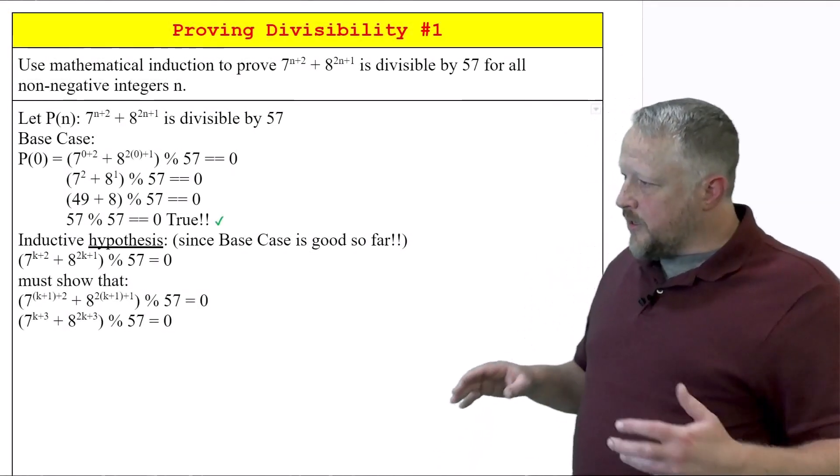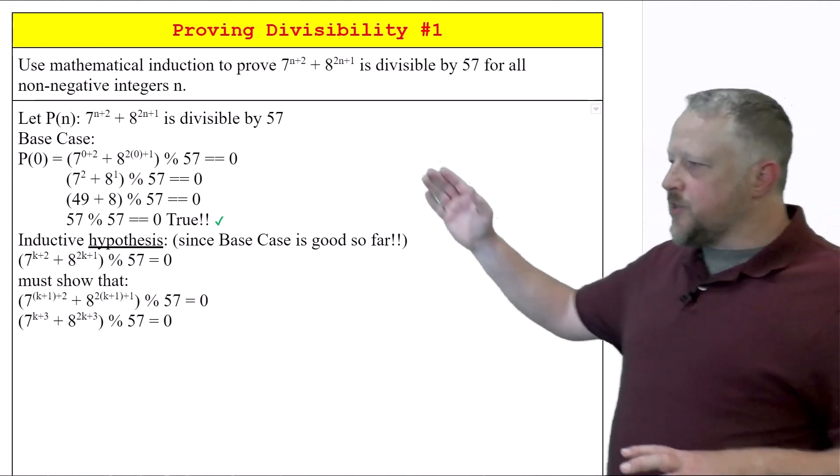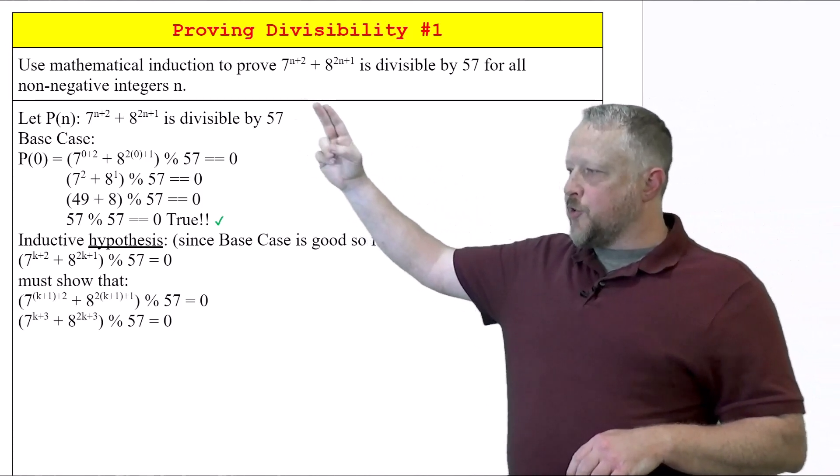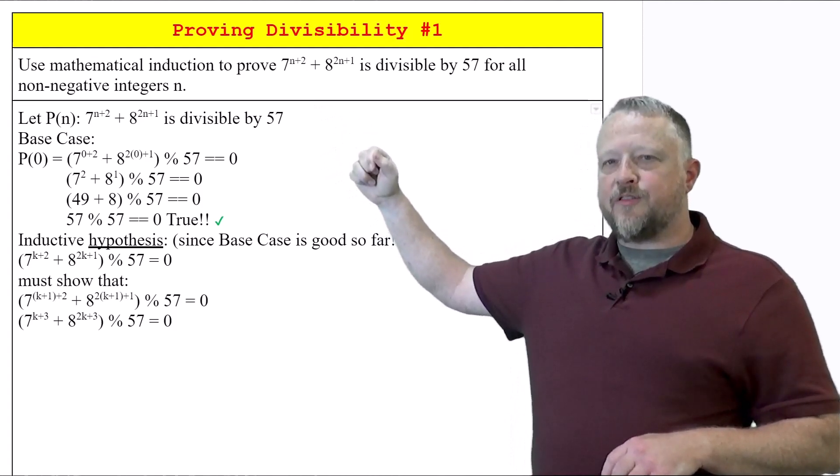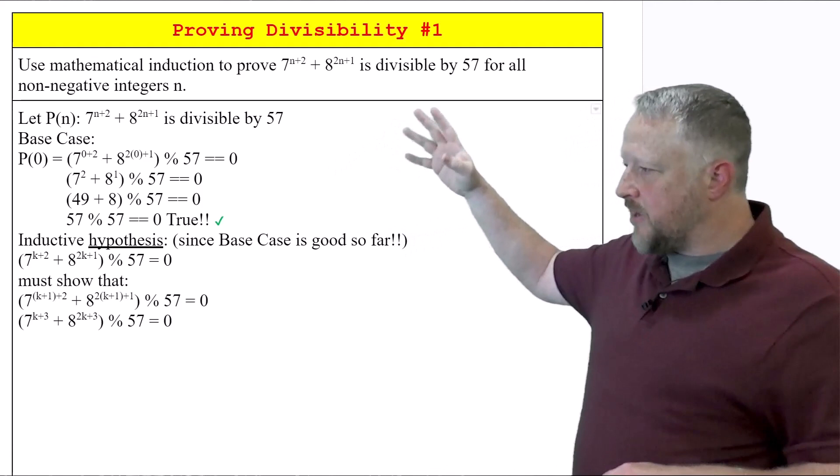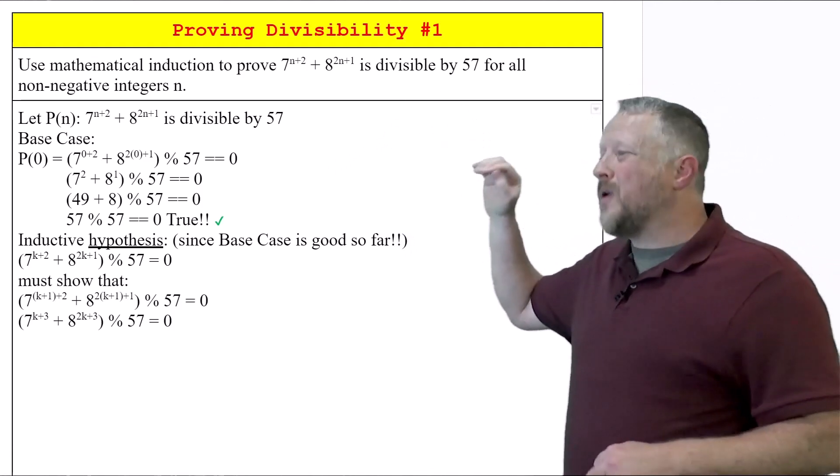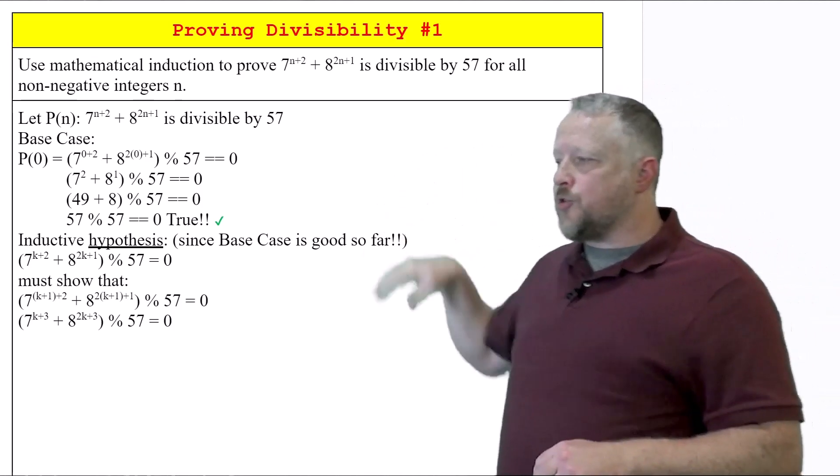Welcome to our first example of proving divisibility. This one's using a very interesting equation. I wonder if superscripts are going to come in problem. Anyway, divisible by 57 for all non-negative integers of n.